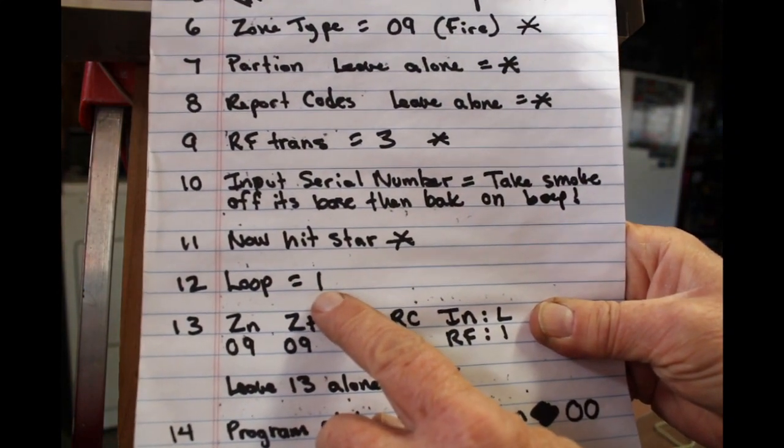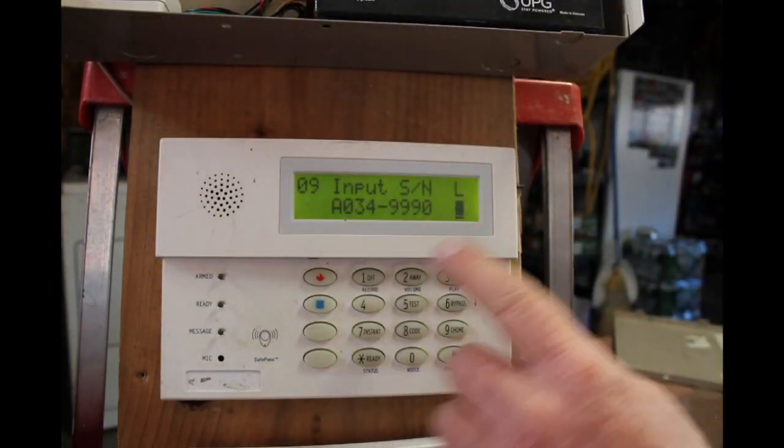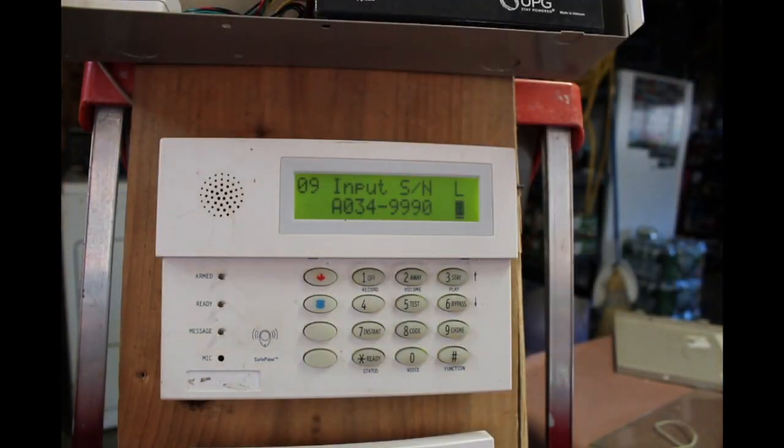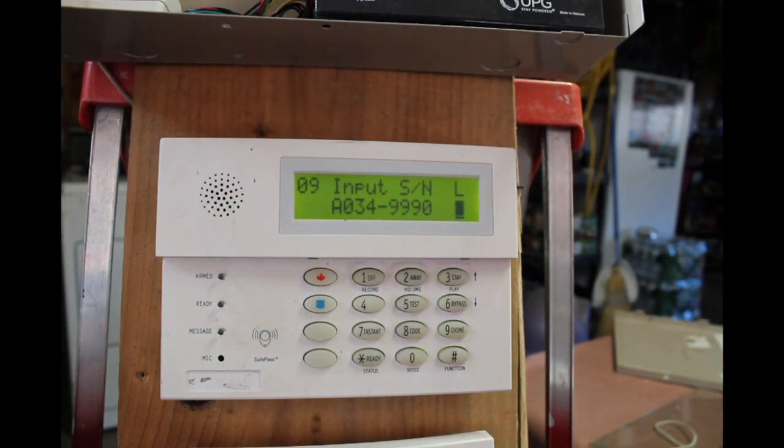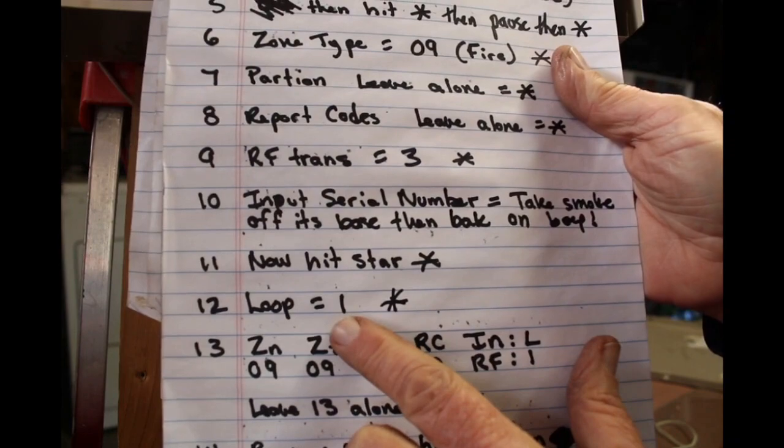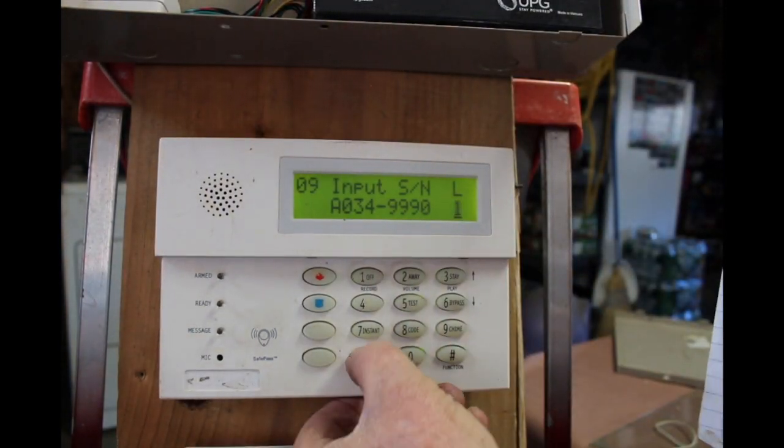The loop number you want to make that number one, so now it's four, you want to go one. All right, now I got to put another star at the end of that, guys. And I lost my... oh here it is, hang on one second. So right here, after you change the loop number to one, hit star. All right, so I change it to one, then hit star.